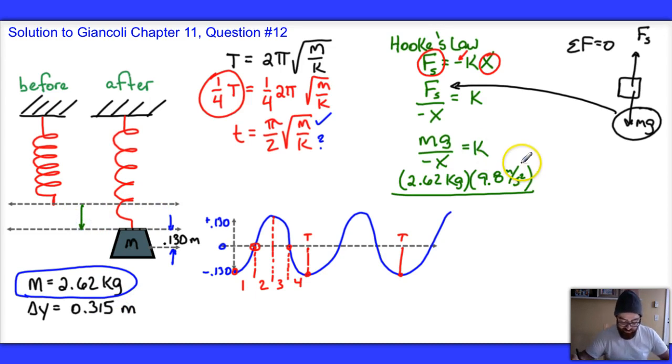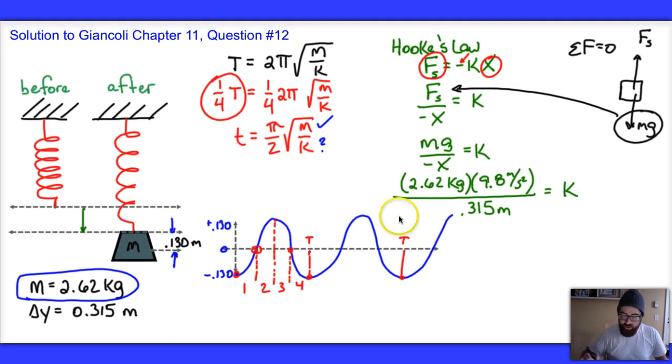So, negative negative 0.315 is positive 0.315 meters. And I'm going to set that equal to the constant of elasticity, K. When I run that through my calculator, I get 81.5 Newtons per meter.